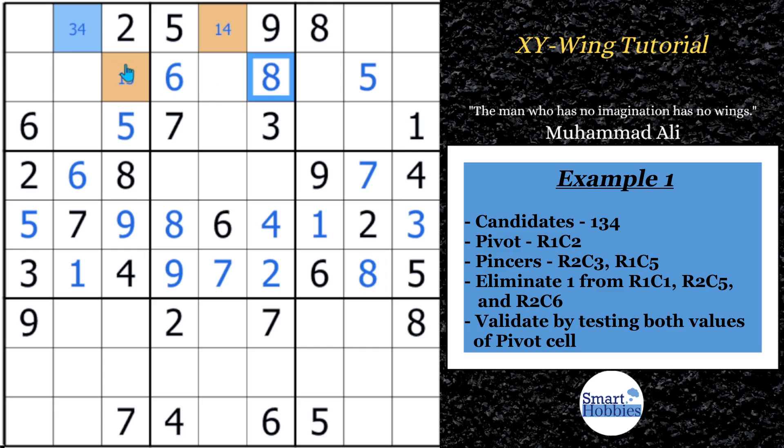So, in this first example, what you might have noticed is that one of the pinchers is inside the block and the other pincher is outside the block sharing the same row as the pivot. Before we get to that next example, if you want to receive exclusive reward puzzle packs and content from setters like this, check out the pinned comment below to join the smarty party. Let's move on to our next example.